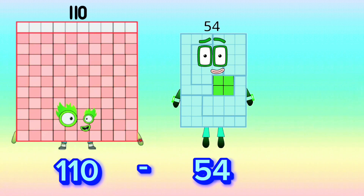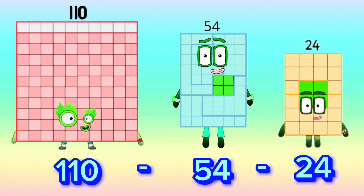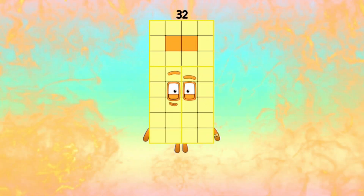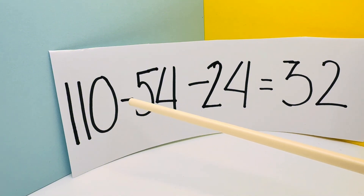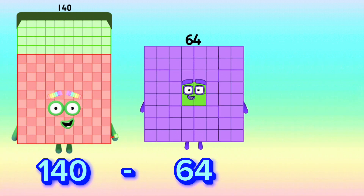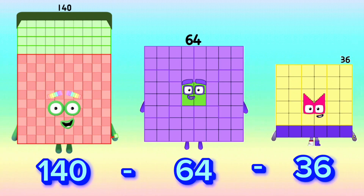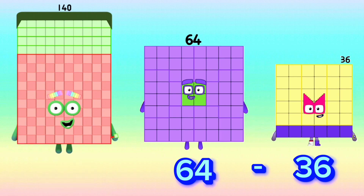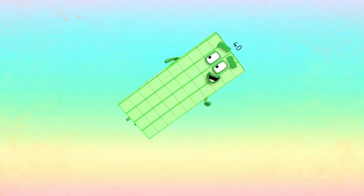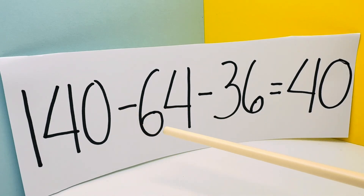110 minus 54 minus 24 is equals to 32. 140 minus 64 minus 36 is equals to 40.